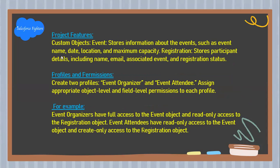Event fields include event name, date, location, and maximum registration capacity. The Registration object stores participant details including name, email, associated event, and registration status. Next: profiles and permissions — create two profiles: Event Organizer and Event Attendee, and assign appropriate object-level and field-level permissions to each profile.